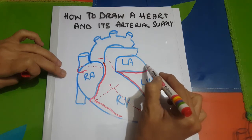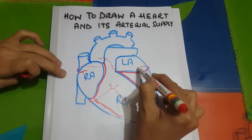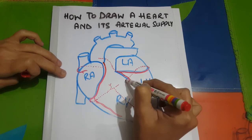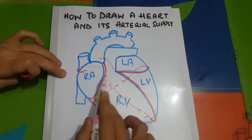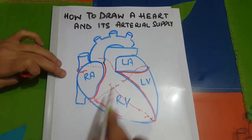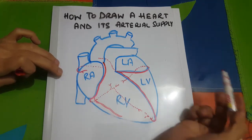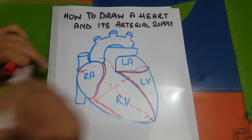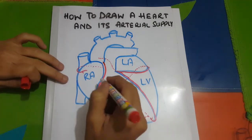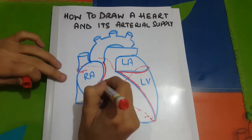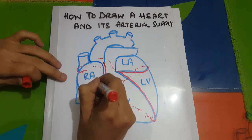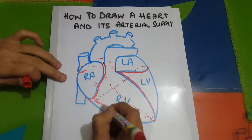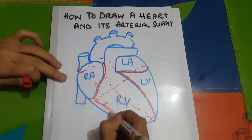The anterior interventricular artery meets the posterior interventricular artery at the apex. The artery running between the left atrium and left ventricle is called the left circumflex artery. It goes back, runs in the posterior atrioventricular groove, and meets the right coronary artery. Now let's make some branches of these arteries to give them a better look.